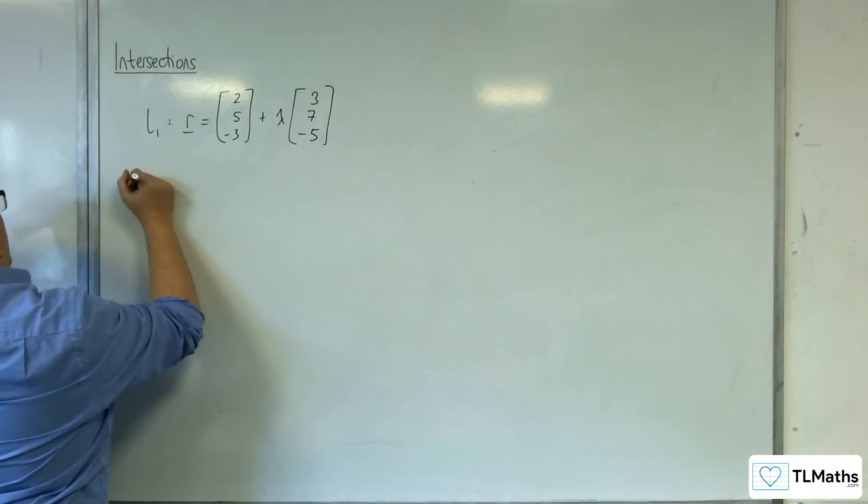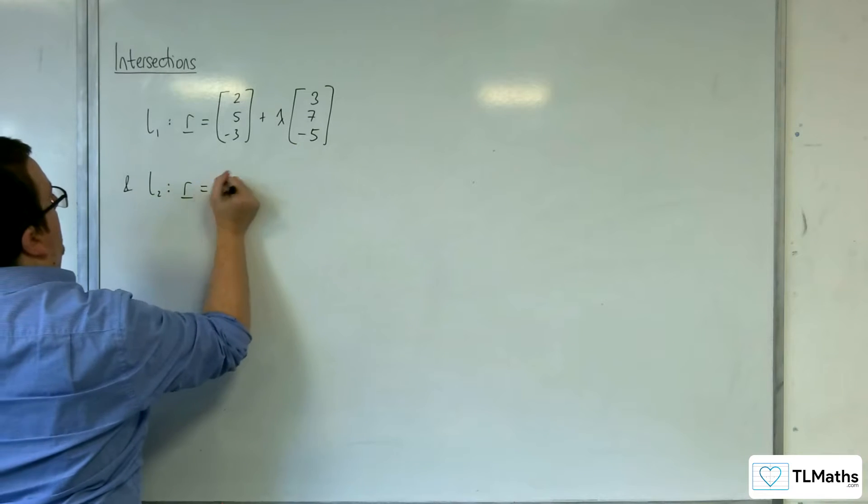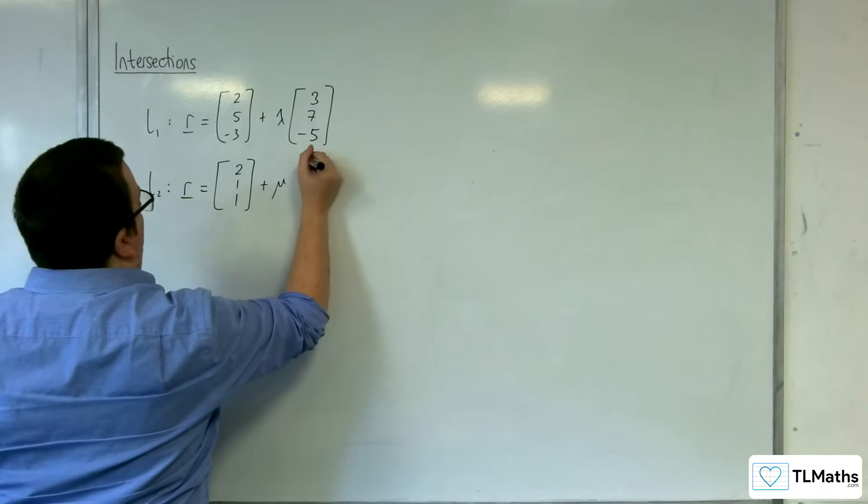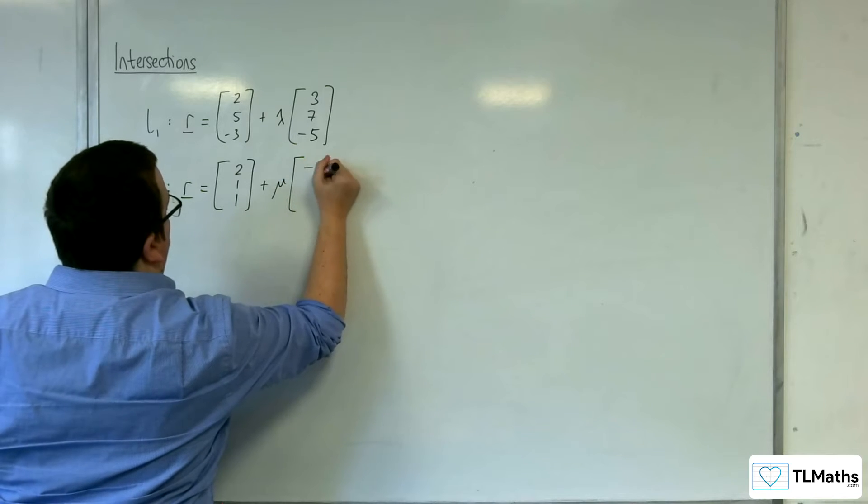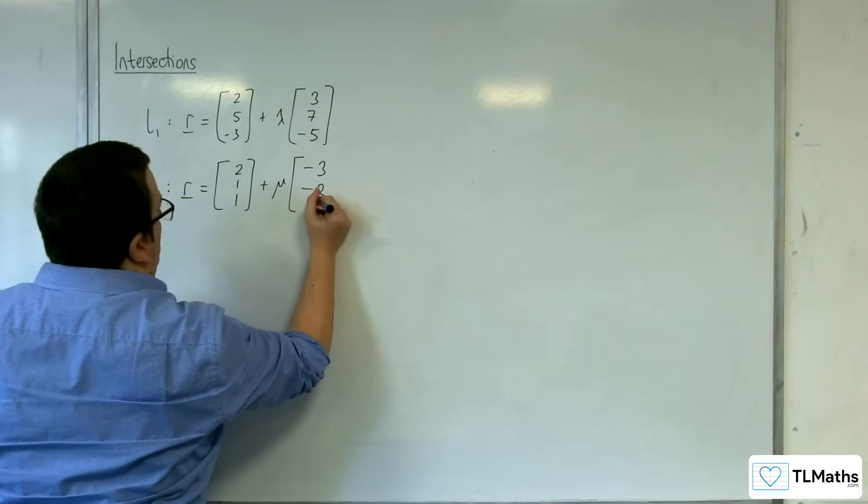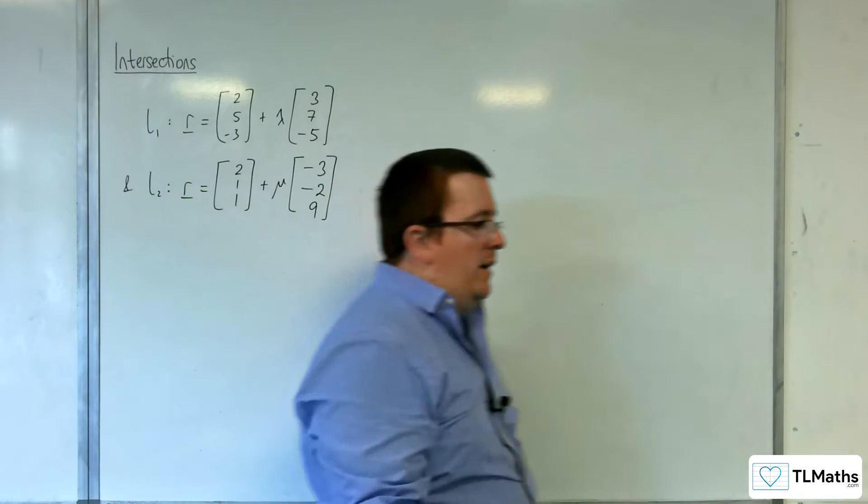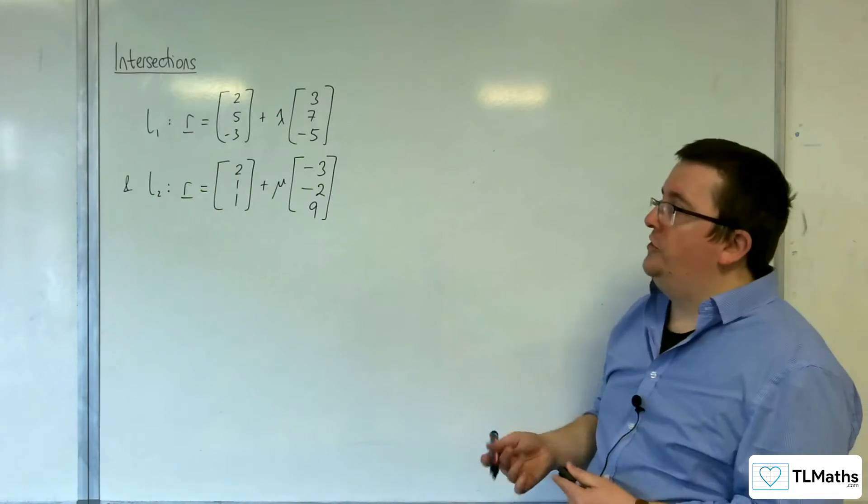And let's have L2 being R equals 2, 1, 1, plus mu times minus 3, minus 2, 9. So here are my two equations of lines.